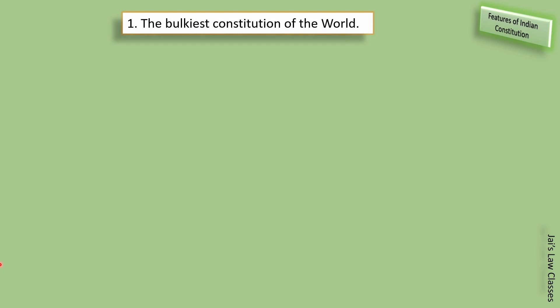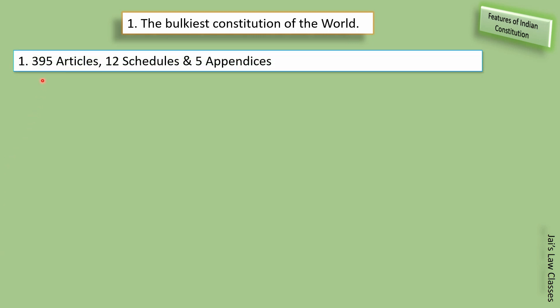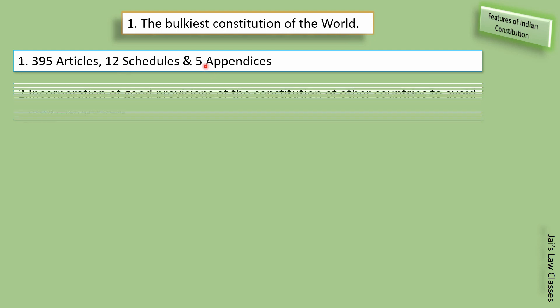First point: the bulkiest constitution of the world. Why is it called the bulkiest constitution of the world? It has 395 articles, 12 schedules, and 5 appendices.